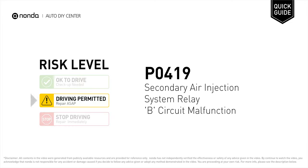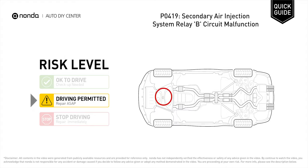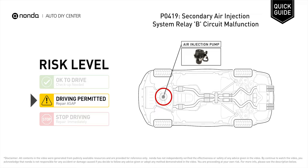The P0419 is a diagnostic trouble code for secondary air injection system relay B circuit malfunction. Under this circumstance, short distance driving is permitted, but your vehicle should be repaired ASAP. The P0419 indicates that the voltage readings from the secondary air injection system register a difference of more than 10% over manufacturer's specifications.